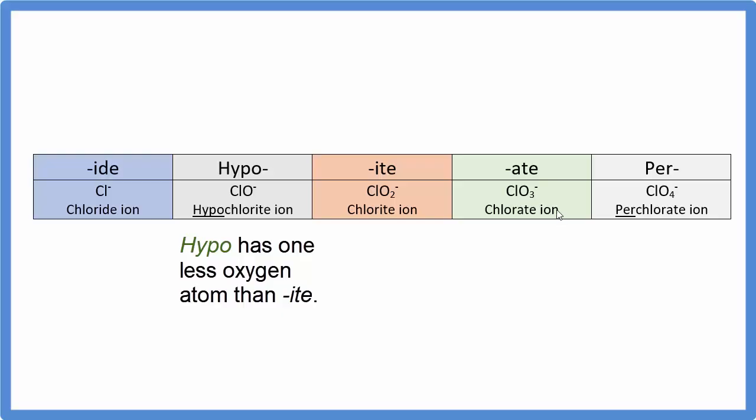If I had something with chlorate, I would add per when I had one more oxygen. So here I have three, I go to four, instead of chlorate, I call this perchlorate.